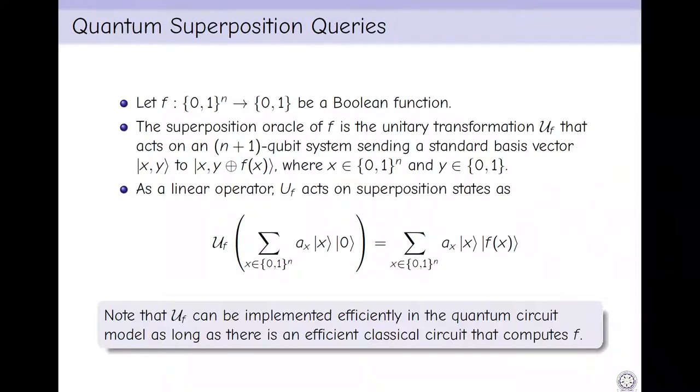How to define quantum superposition queries? Let F be a Boolean function. The superposition oracle of F is the unitary transformation UF that acts on n+1 qubit system which sends a standard basis vector |x,y⟩ to |x, y⊕f(x)⟩. As a linear operator, UF acts on superposition states as UF on the summation over all x of αx|x⟩|0⟩ equals the sum over all x of αx|x⟩|f(x)⟩. We can efficiently implement UF in the quantum circuit model as long as there exists an efficient classical circuit that computes F.